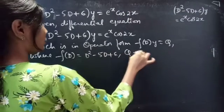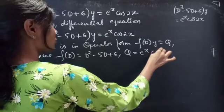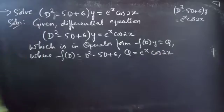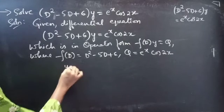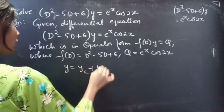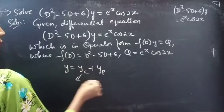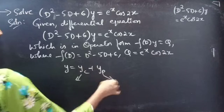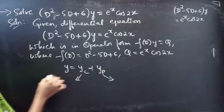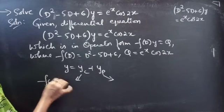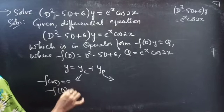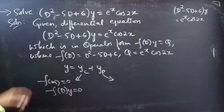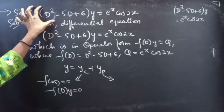We need to find the general solution to the given equation, which is given by y = yc + yp. Here yc is the complementary function and yp is the particular integral.